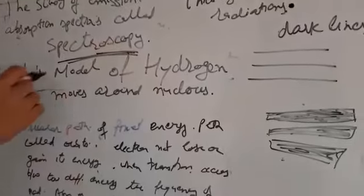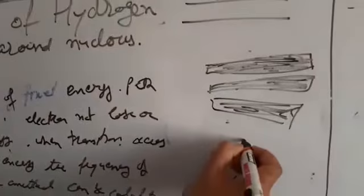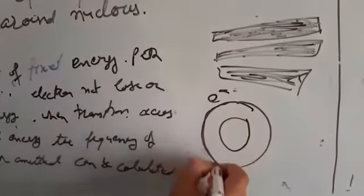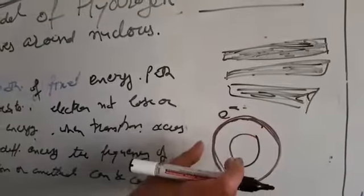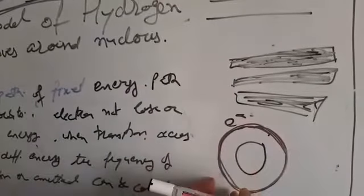Next is the Bohr's model of hydrogen atom. What he said: in the center there is a nucleus and electrons are revolving around the nucleus in their fixed orbits or in their fixed path. Energy of these electrons is fixed. They do not lose their energy or gain the energy.